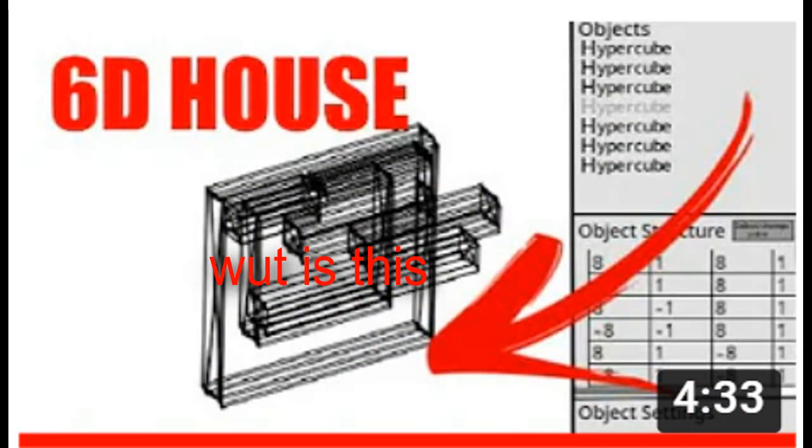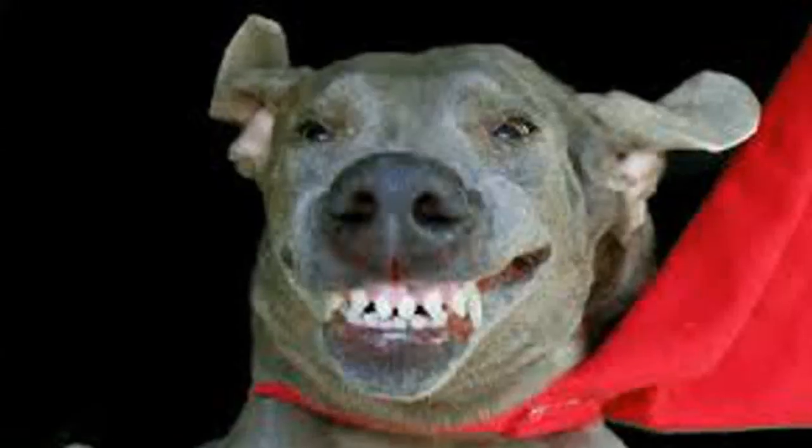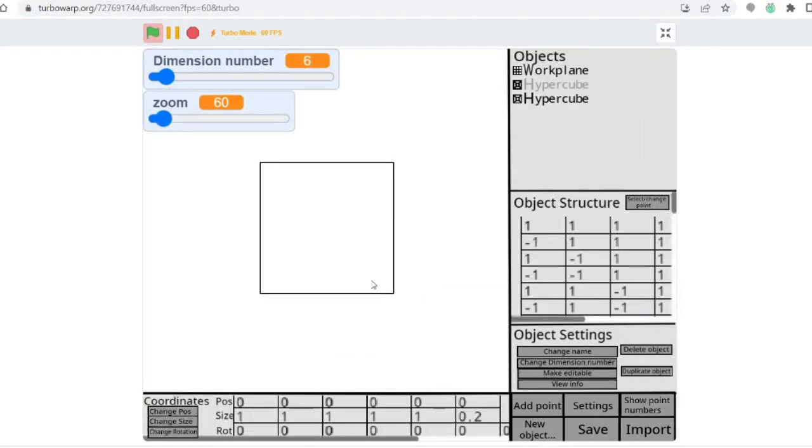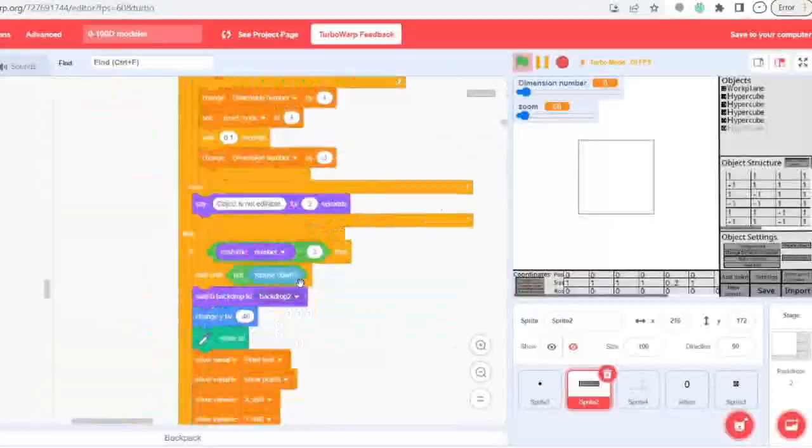You know how the 6D house on the thumbnail from last time was terrible? Well, that is because I kind of just added a bunch of random hypercubes everywhere with no order. So today, I will be making an actual 6D house. By that, I mean a 6D house built for 3D people. I started out by making 4 6-dimensional walls, and a 6-dimensional floor and ceiling.